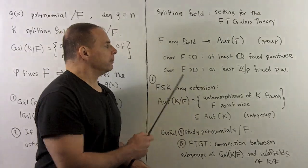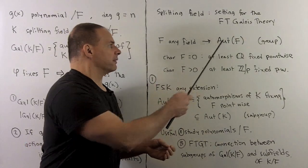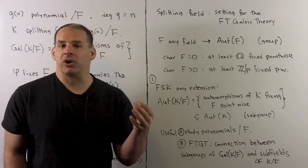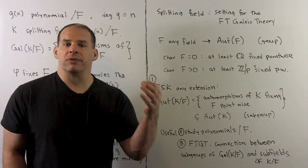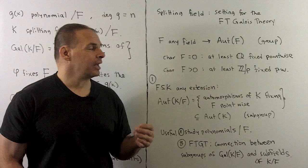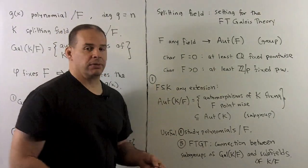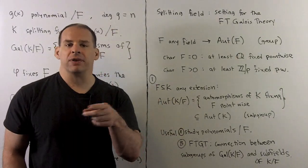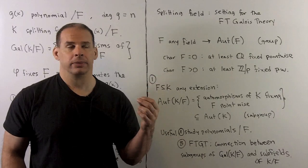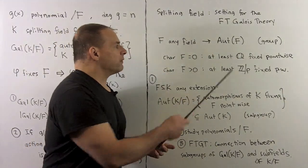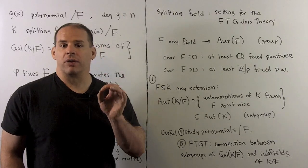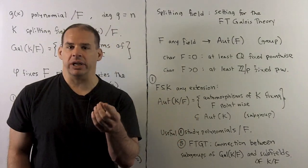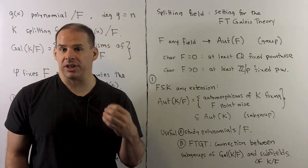If I have F any field, I consider the field automorphisms of F — that's going to be a group. We know if the characteristic of F is equal to zero, then 1 is going to generate a copy of the rationals, and any automorphism will fix those rationals pointwise. Likewise, if the characteristic of F is a prime P, then 1 generates a copy of Z mod P, and any automorphism will fix that Z mod P pointwise. The set of elements fixed by a given automorphism may be bigger than our rationals or Z mod P, so there's a definite connection between automorphisms and subfields by considering elements that are fixed.